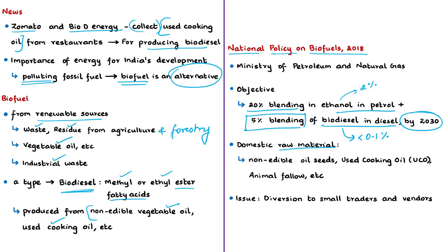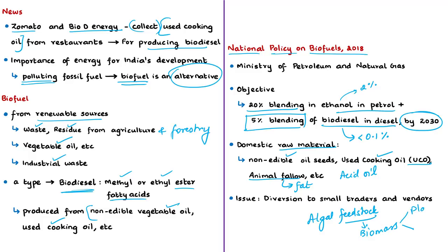The policy also mentions potential domestic raw materials for biodiesel production: non-edible oil seeds, used cooking oil (UCO), animal tallow (animal fat), acid oil, and algal feedstock. A feedstock is defined as any renewable biological material that can be used directly as a fuel or converted to another form of fuel or energy. Biomass feedstocks are plant and algal materials; when obtained from algal material, they are known as algal feedstock.